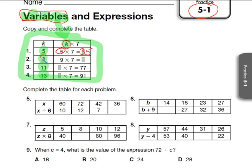So again, in number two, they took the 9, they replaced it where k is, and now they have 9 times 7. So go ahead and solve that problem.